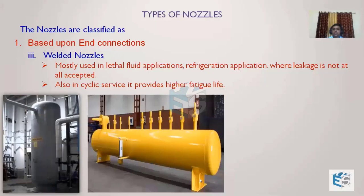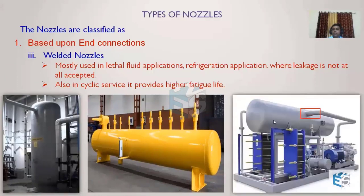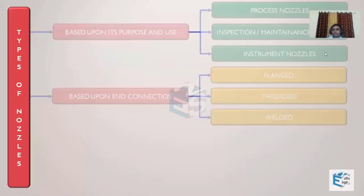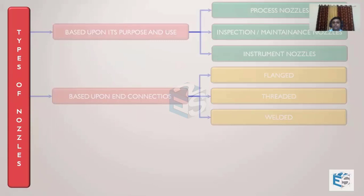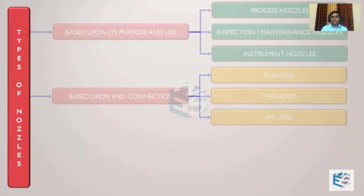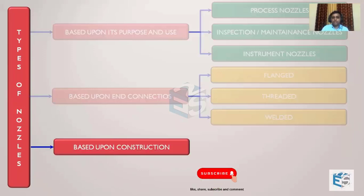In refrigeration industry equipment, all nozzles are welded nozzles — there are no threaded or flange joints. The nozzle is directly welded to the rest of the piping. These are used mostly where lethal services or high pressures are present and where any leakage would have very dangerous consequences. This is why we use welded-type construction in such cases.